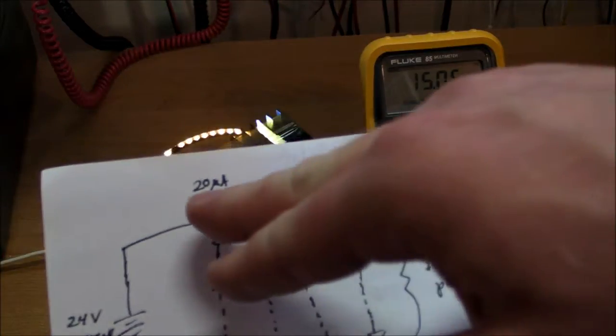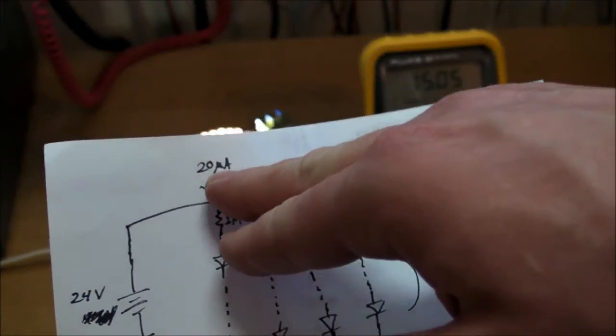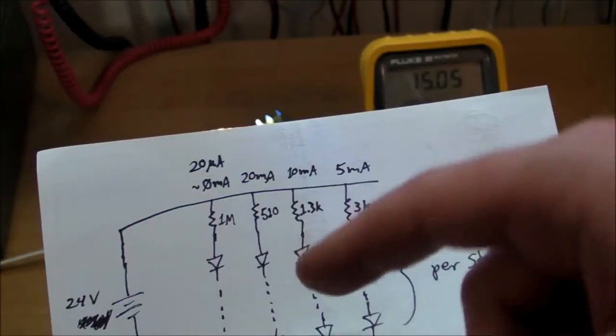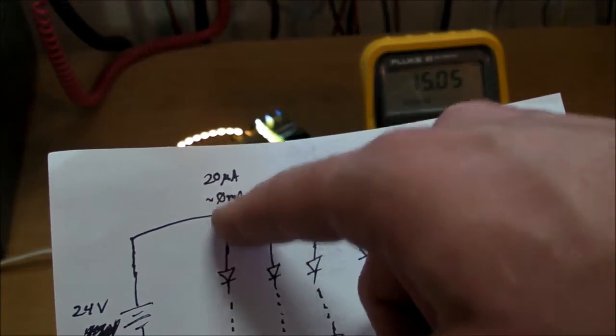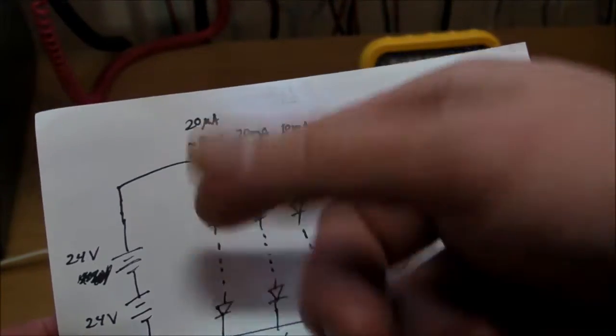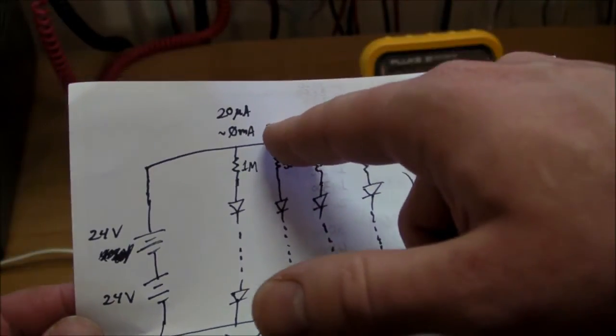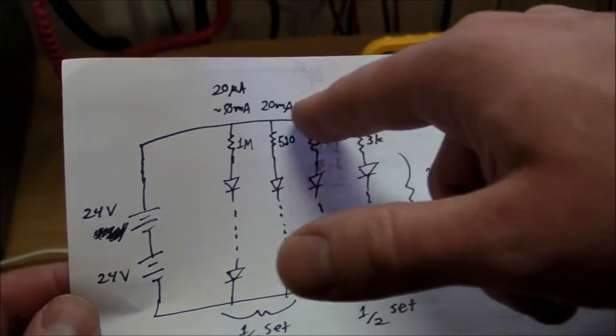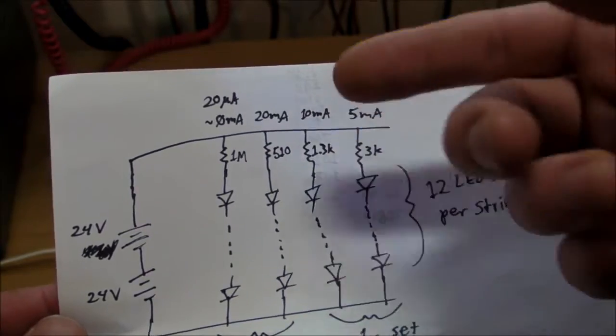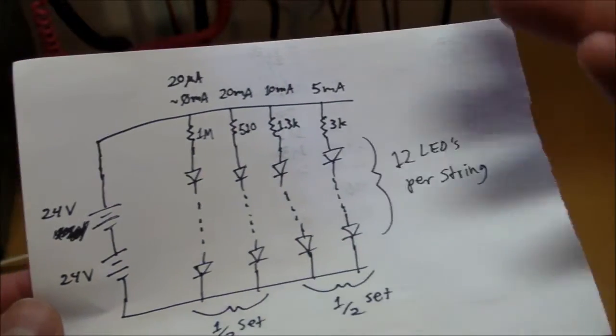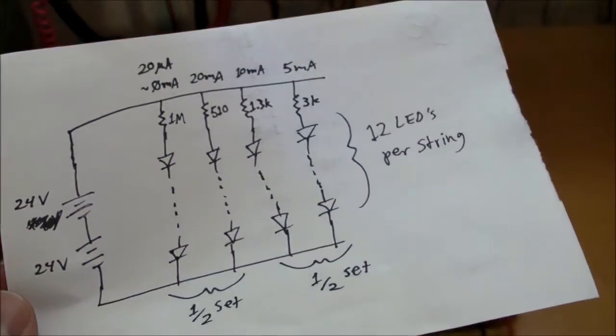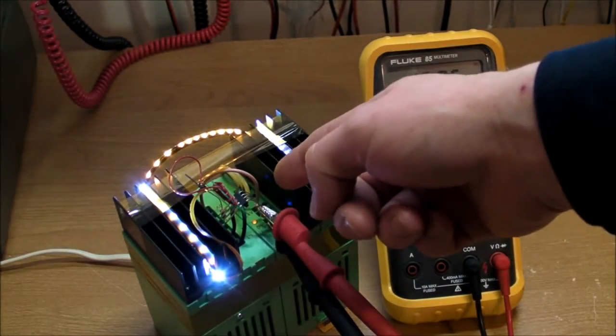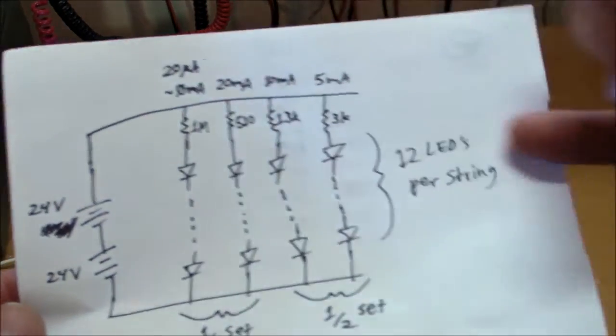And indeed they are. Measured 20 microamps on the approximate zero milliamp string, so that's zero milliamps really. And 20, 10, and five milliamps, very close to what I actually measured. I just measured the voltage across these resistors right here.